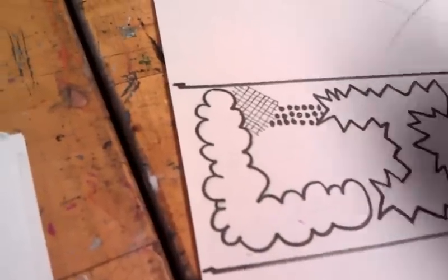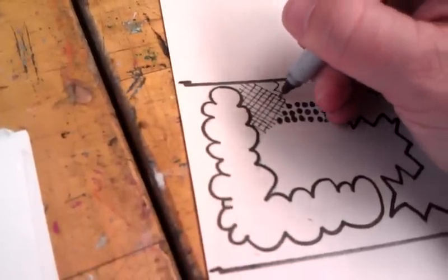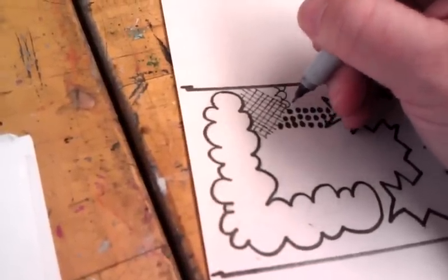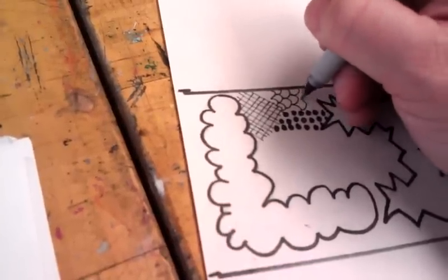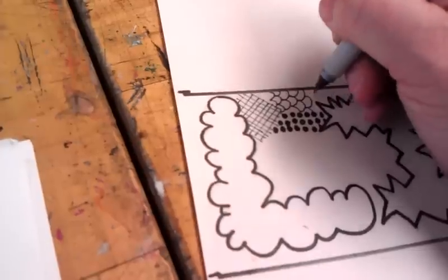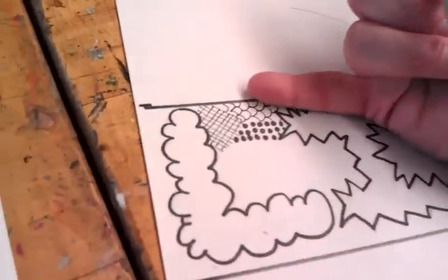Now I'm going to move on to do maybe a lighter value, and this time I'm going to go this direction. Spread these lines apart, it's going to make it appear lighter. And remember, I'm only going as far as my pinky.